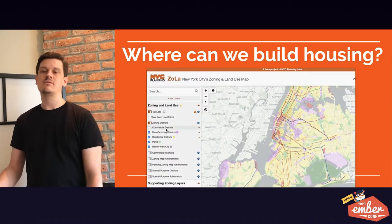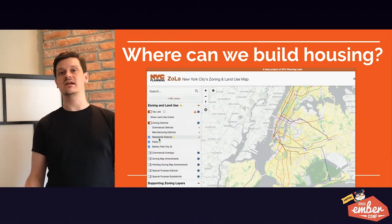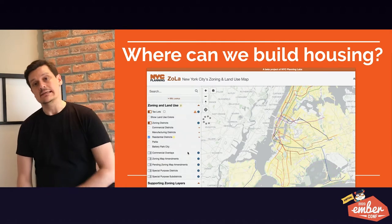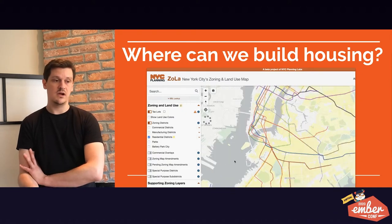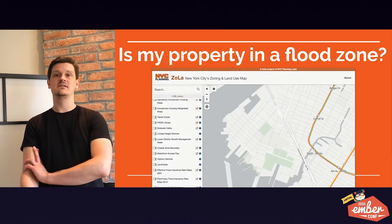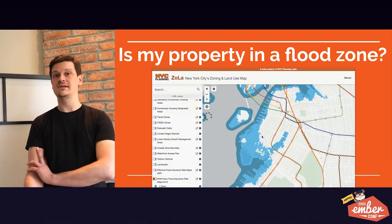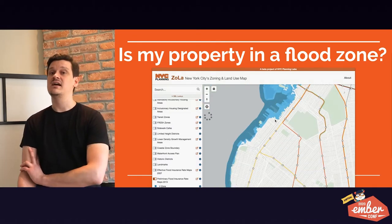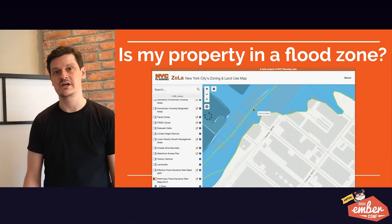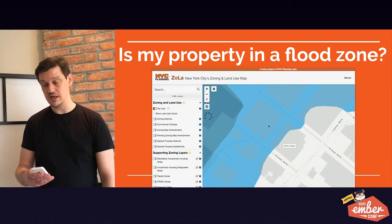Some examples: where can we build housing? You can use Zola to look at where all the residential zoning is and where you can build in a particular neighborhood. Is my property in a flood zone? We can show you if a property is in a flood zone 30 years from now or 60 years from now — that data is publicly available to you.